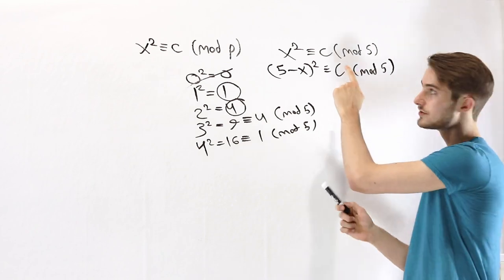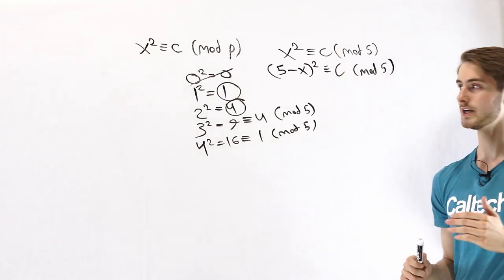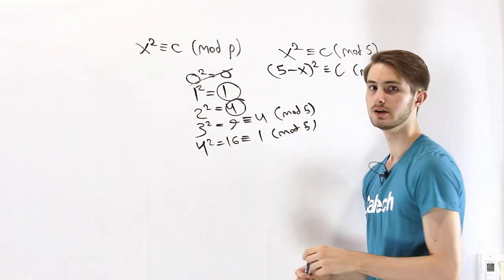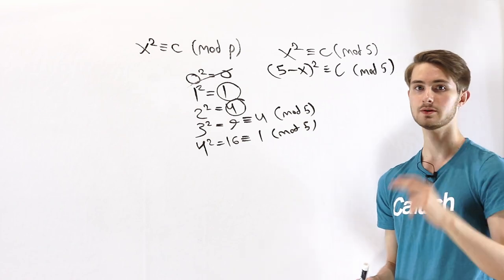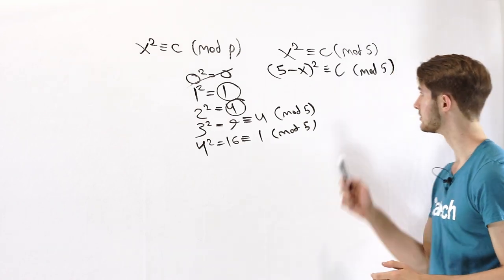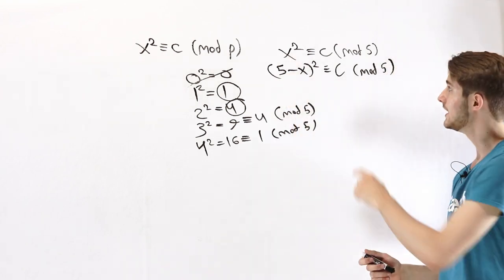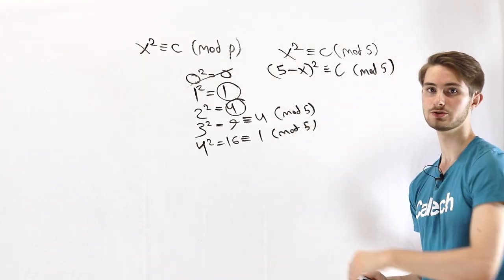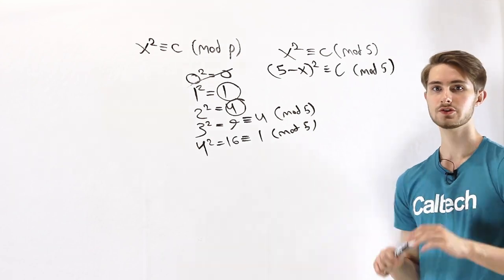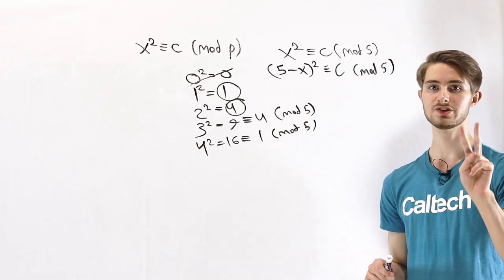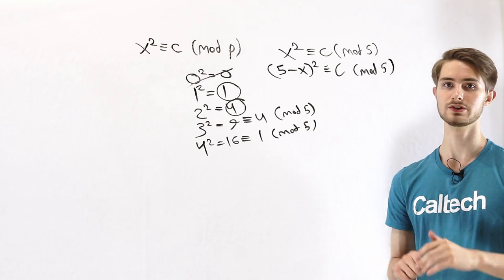One of the consequences of this fact is that any time we have a quadratic residue, there are going to be two different numbers that give that result mod 5. It's going to be the first solution that we find and then p minus that solution. Both are going to give us the same result, so there will always be two solutions any time a number is a quadratic residue.